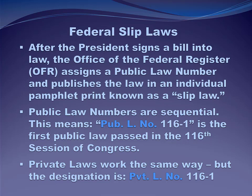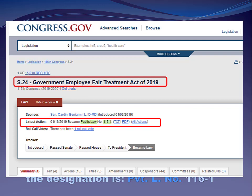Regarding the numbering scheme — each Congress lasts for two years and is comprised of two sessions. Since 1934, the first session has convened on January 3rd of odd-numbered years, and the second session on January 3rd of even-numbered years. You can see on the slide that 116-1 means the 116th Congress, session 1. On congress.gov you can see an example: 116-1 is the first slip law passed in the first session of the 116th Congress.